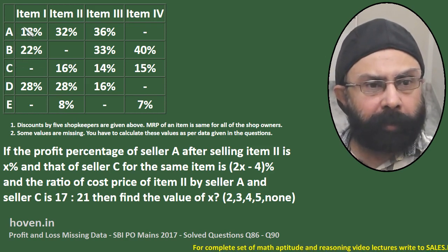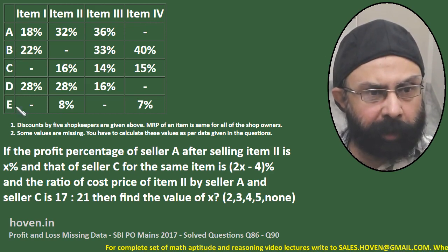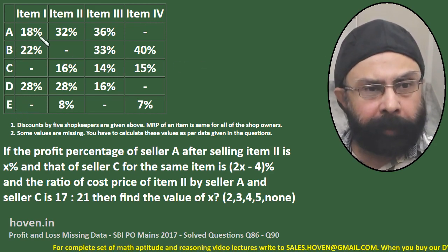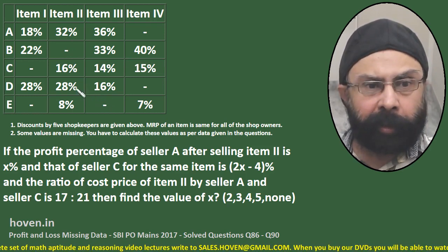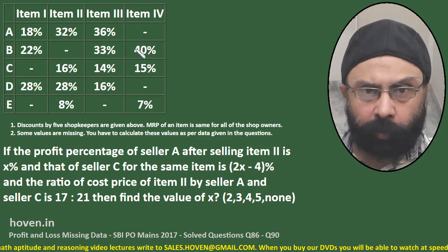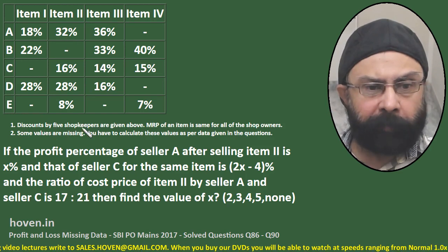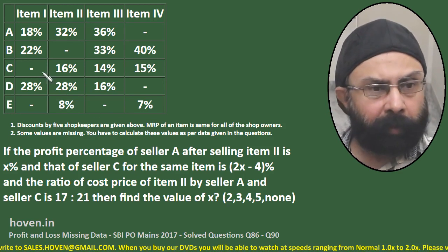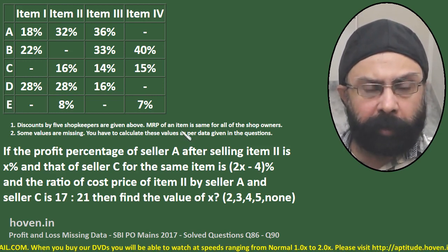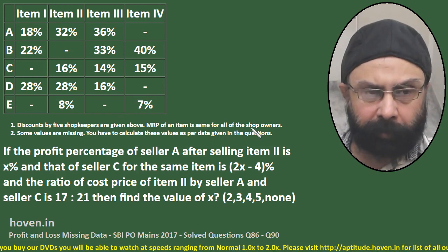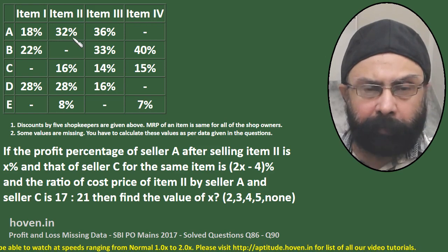Item 1, item 2, item 3, item 4 and sellers A, B, C, D, E are given, and certain figures in percentages are given to us. Interestingly, some figures are missing, and these notes are important. Discounts by five shopkeepers are given above — A, B, C, D, E are the five shopkeepers. The MRP of an item is the same for all the shopkeepers. These are the discounts and MRP is same.